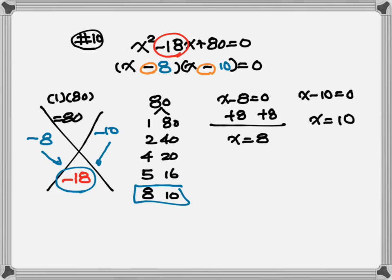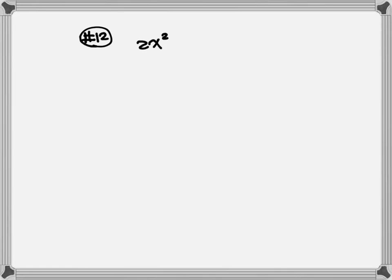Now let's look at number 12. We have 2x squared equals 3 minus x. One side of the equation must equal to 0. Also, keep the highest exponent as a positive number. So we're going to move everything to the left-hand side and put everything in order. We have 2x squared plus x minus 3 equals 0.